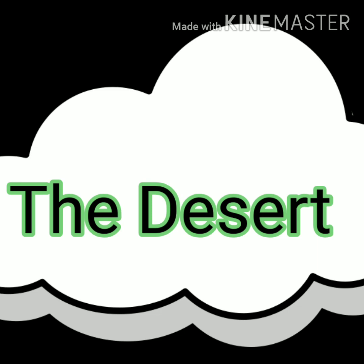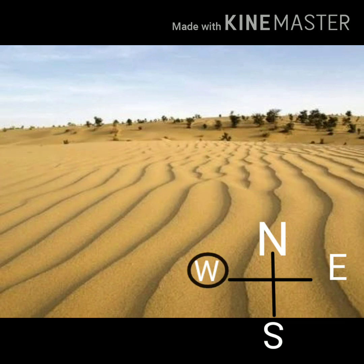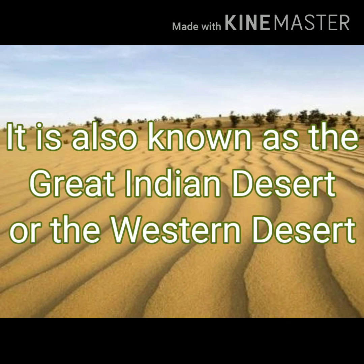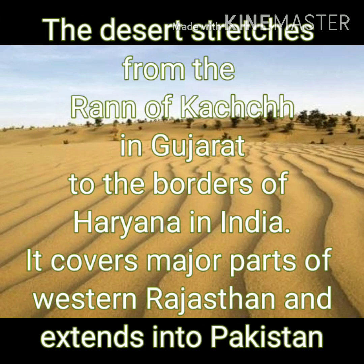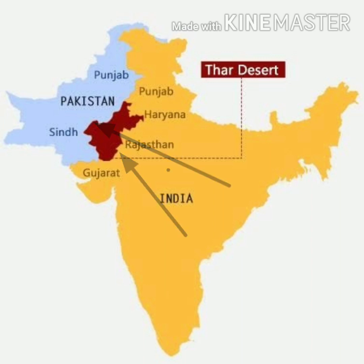The Thar Desert is located in the western part of India. It is also known as the Great Indian Desert or the Western Desert because it lies in the western part of India. The desert stretches from the Rann of Kutch in Gujarat to the borders of Haryana in India. It also covers the major parts of western Rajasthan and extends into Pakistan.